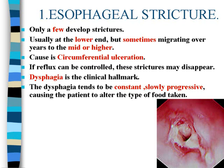Complications: 1 — esophageal stricture. Only a few patients develop strictures. Usually at the lower end, but sometimes migrating over years to the mid or higher esophagus. This causes circumferential ulceration.